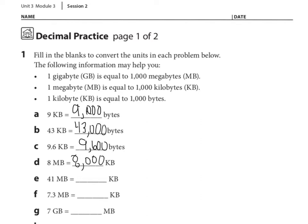E says 41 megabytes equals how many kilobytes? Again, we're multiplying by 1,000, so the answer is 41,000.